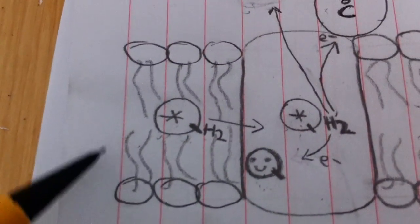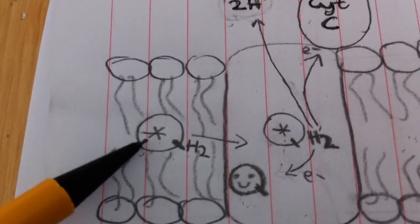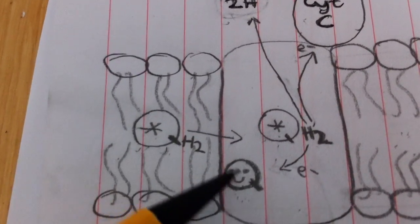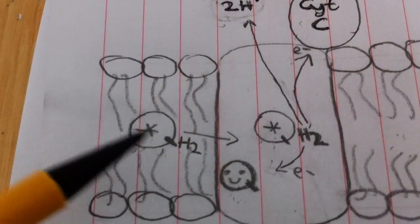Right, this is the membrane. This is coenzyme Q, and I've given the coenzyme Q's different symbols so that we can track which one's which.